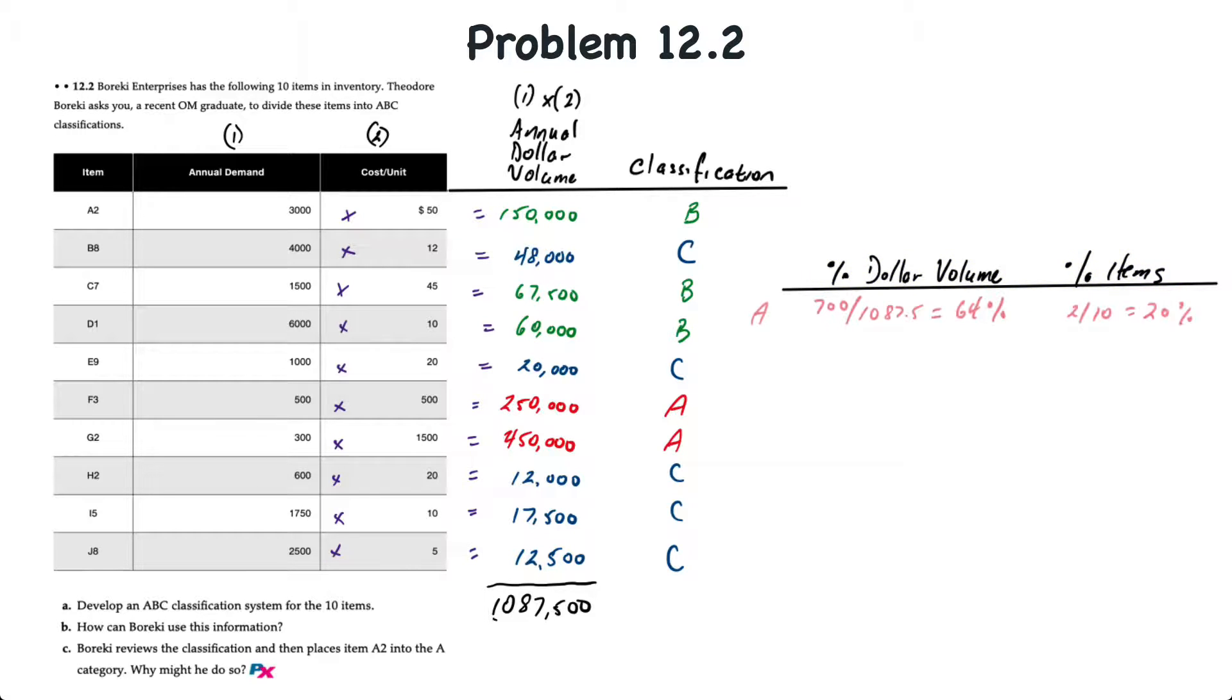So for A-level items, we have two items out of 10 that comprises 20%, and the sum of the value, $250,000 plus $450,000 is $700,000. If we divide that by $1,087,500, that's 64%. So that's not quite 80-20, which is sometimes what we see with A-level inventory, where 20% of the items can represent up to 80% of the investment in inventory or annual dollar volume.